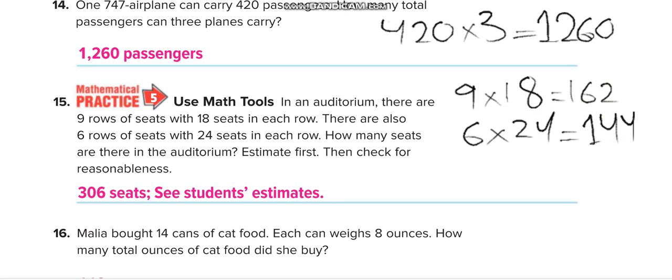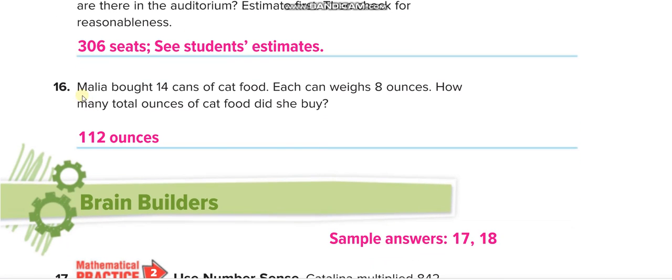No need of estimation. Malia bought 14 cans of cat food. Each can weighs 8 ounces, so 14 times 8 equals 112 ounces.